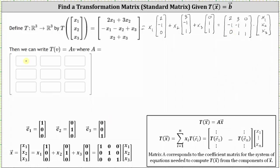Where the first column is (2, negative one, zero), the second column is (3, negative one, one), and the third column is (0, one, one). Related to this, if we are given T of vector x equals matrix A times vector x, we can always find matrix A — the transformation matrix or standard matrix — by determining the transformations of vectors e sub one through e sub three. The transformations will make up the three columns of the three by three matrix A.